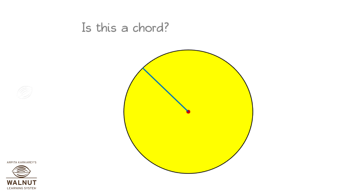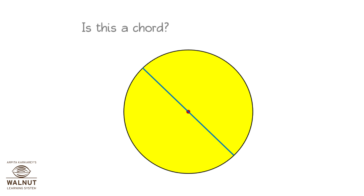Is this a chord? No. Both ends of the line have to lie on the edge of the circle. Here, only one end lies on the edge — the other lies on the center. So this is a radius, not a chord. Is this a chord? Yes — both ends of the line lie on the edge of the circle. So this is a chord.